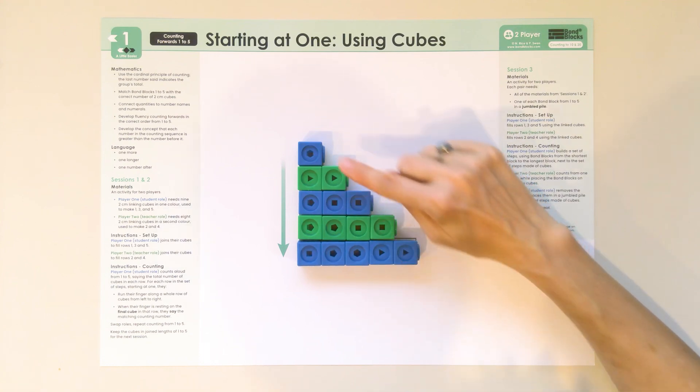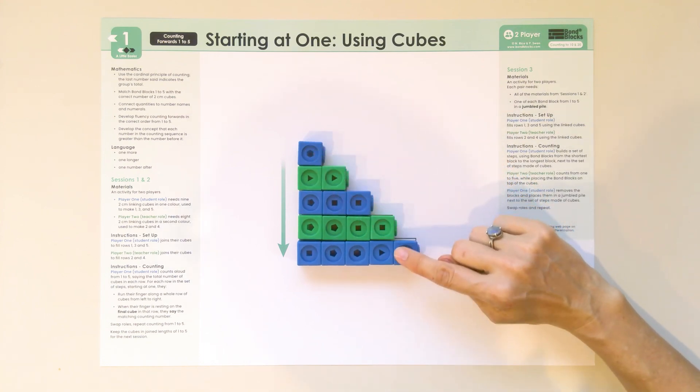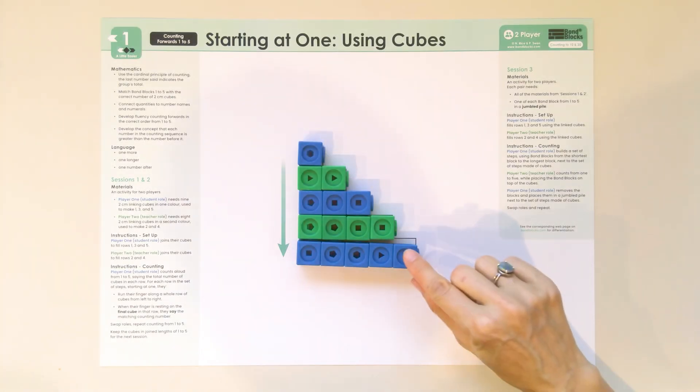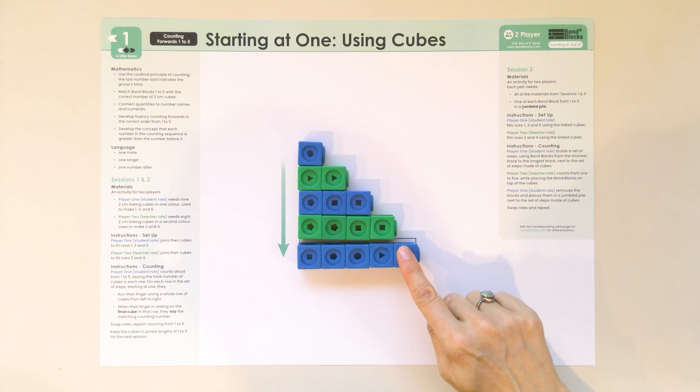The reason we say the counting number on the last cube is when we say the number five, that means that the whole row is worth five. The reason we say five on the end is because when we count one, two, three, four, five, the last number we say tells us how many in the whole row.